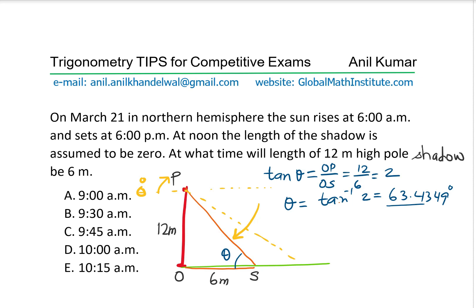Now we need to find the time. To find the time, it is important to understand that the sun goes through 90 degrees in how much time. It rises at 6 a.m. and at 12 noon it is right on top, so it covers 90 degrees in 12 minus 6, which is 6 hours. We need to find how much time it will take for 63.4 degrees — that is 6 divided by 90 times 63.4, which gives us 4.22 hours.